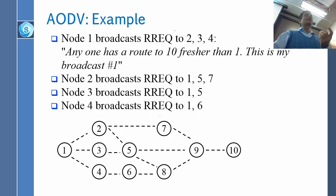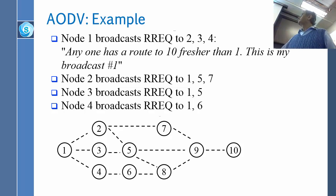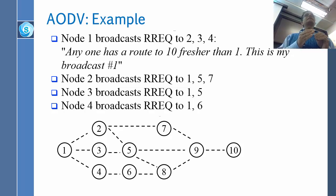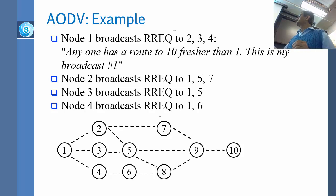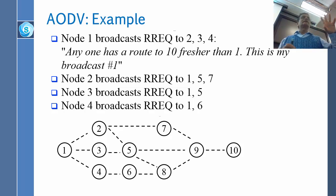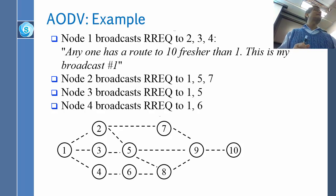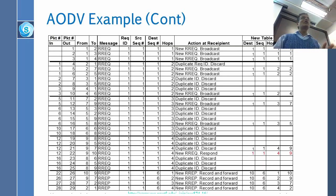When node 10 sees the first request from node 1, it says: I know the shortest path — I am right here. It will tell node 9 where it came from, and 9 will send the reply back along the shortest path. Node 10 will receive many of those requests because every path will eventually arrive, at least from 7, 8, and 5. The rest will be discarded because they have the same request ID number. The very first one that arrives gets answered.